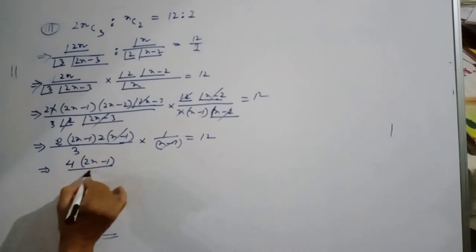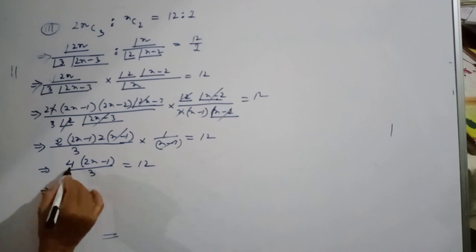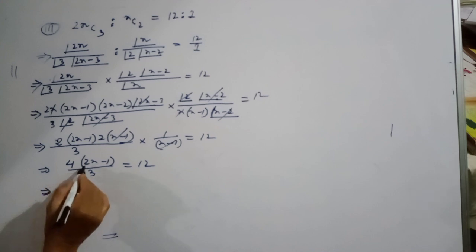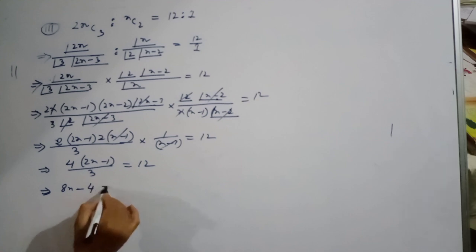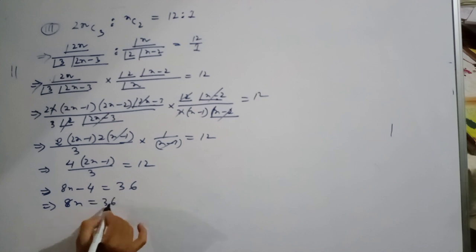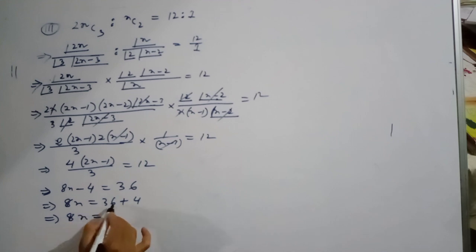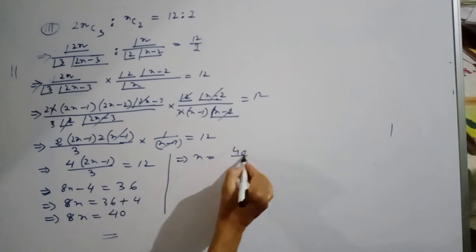After cancellation, (2n minus 1) divided by 3 equals 12. So 4 into (2n) minus 4 equals 8n minus 4, and 12 into 3 equals 36. Therefore 8n equals 36 plus 4, so 8n equals 40.